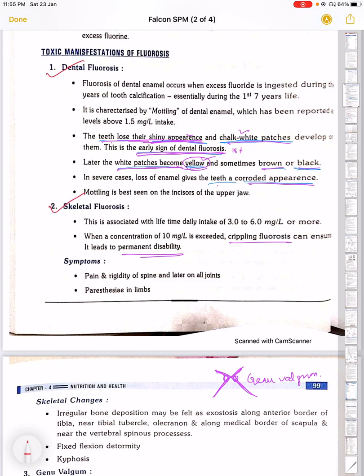In dental fluorosis, the teeth normally show a shiny appearance, but due to fluorosis it loses its shiny appearance. Chalky white patches are seen on the teeth in the early stage of fluorosis. In later stages, these white patches become yellow in color and sometimes brown or black.